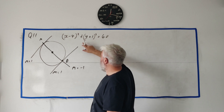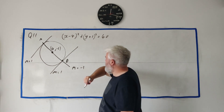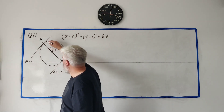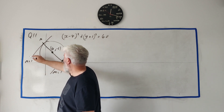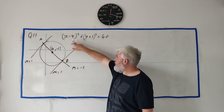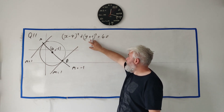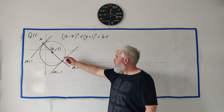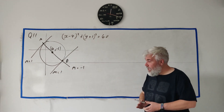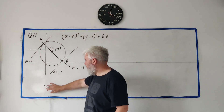We can read the centre point from the circle equation: it's (4, -1). A lot of students mix up the signs here — when do you change them and when do you not? Looking at the axes helps: it's plus four and minus one. Anyway, we now have a slope and a point, so it should be straightforward to find the equation.